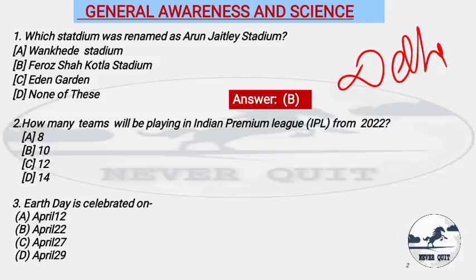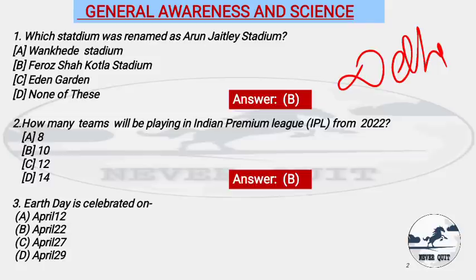Question 2: How many teams will be playing in the Indian Premier League (IPL) from 2022? Options: A) 8, B) 10, C) 12, D) 14. The right answer is option B — 10 teams will be playing in IPL in 2022.